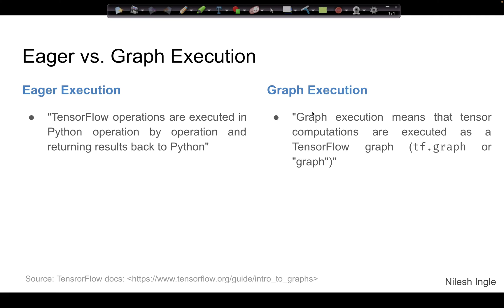Once it creates a graph, if you call that graph to run your two numbers and get the added values back, then that would be graph execution, because you are using a graph in that case.